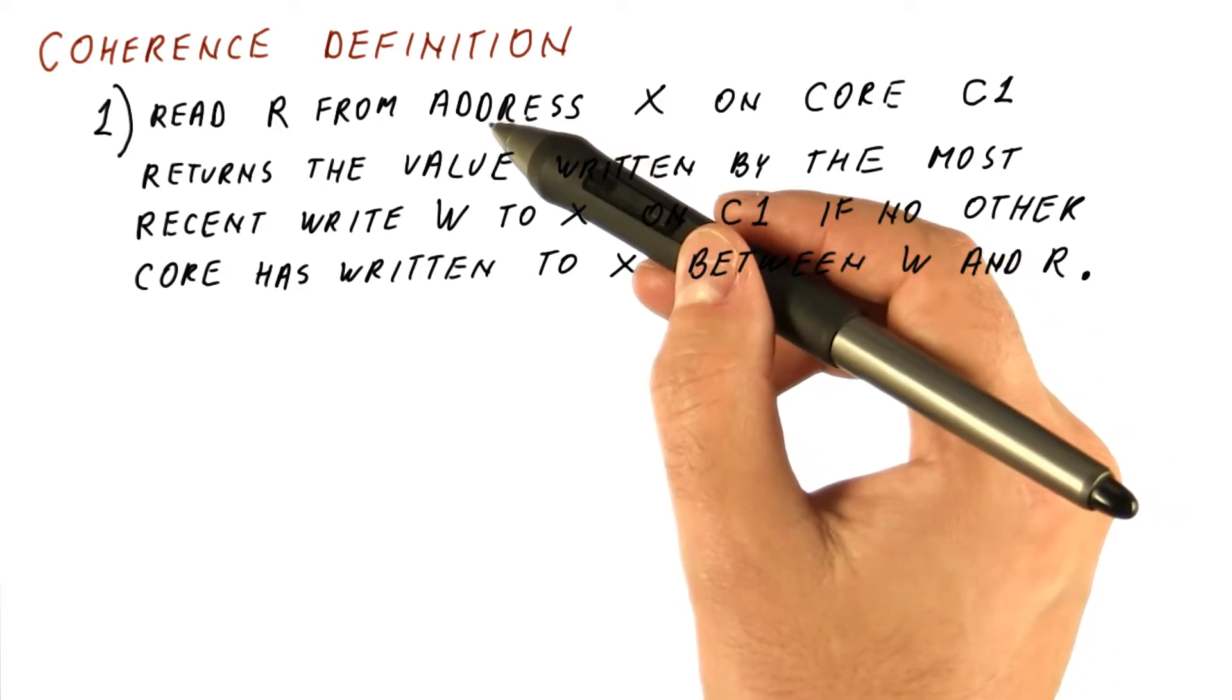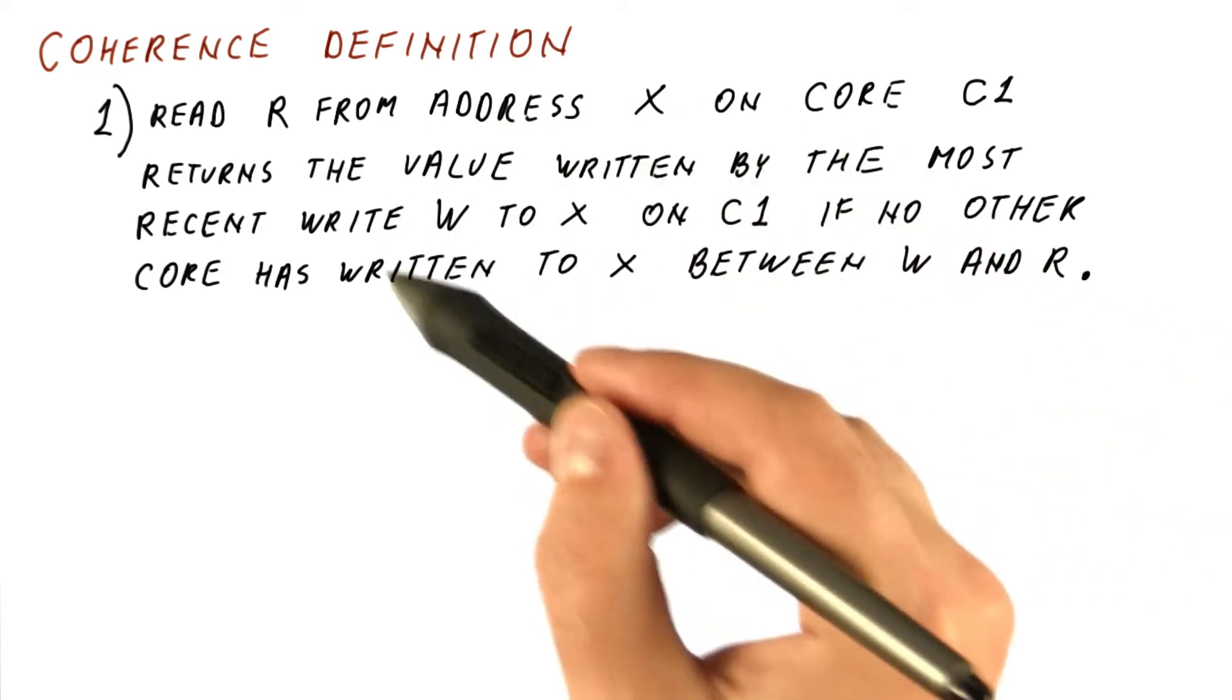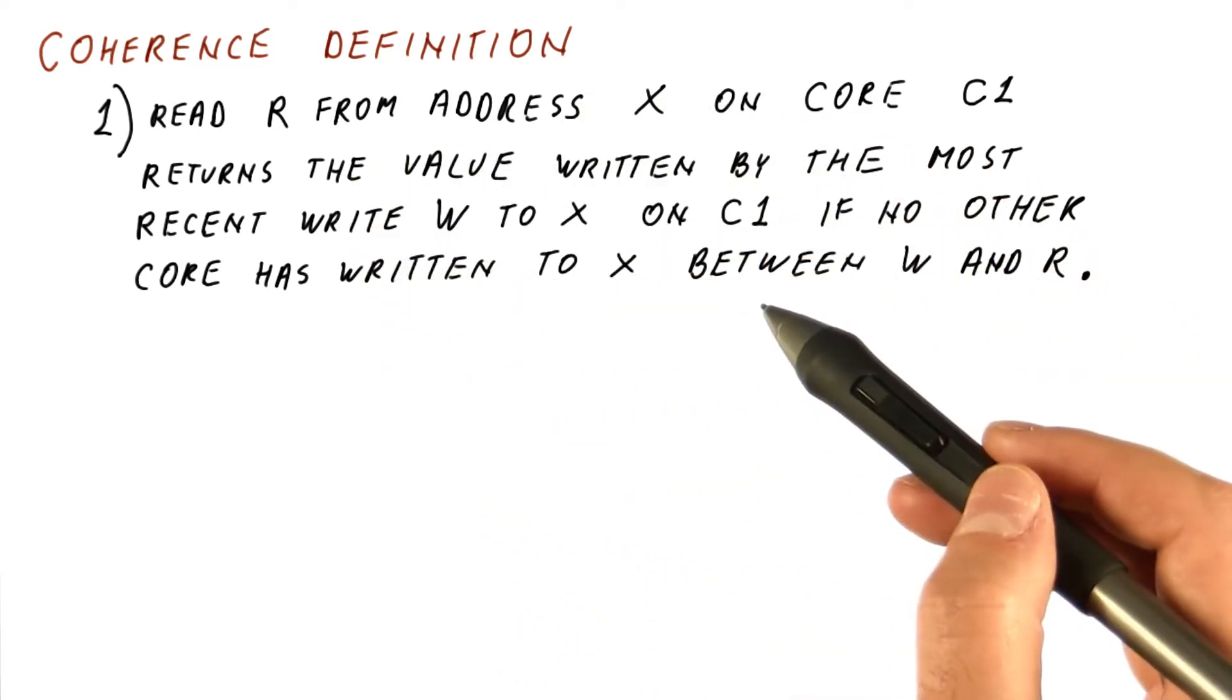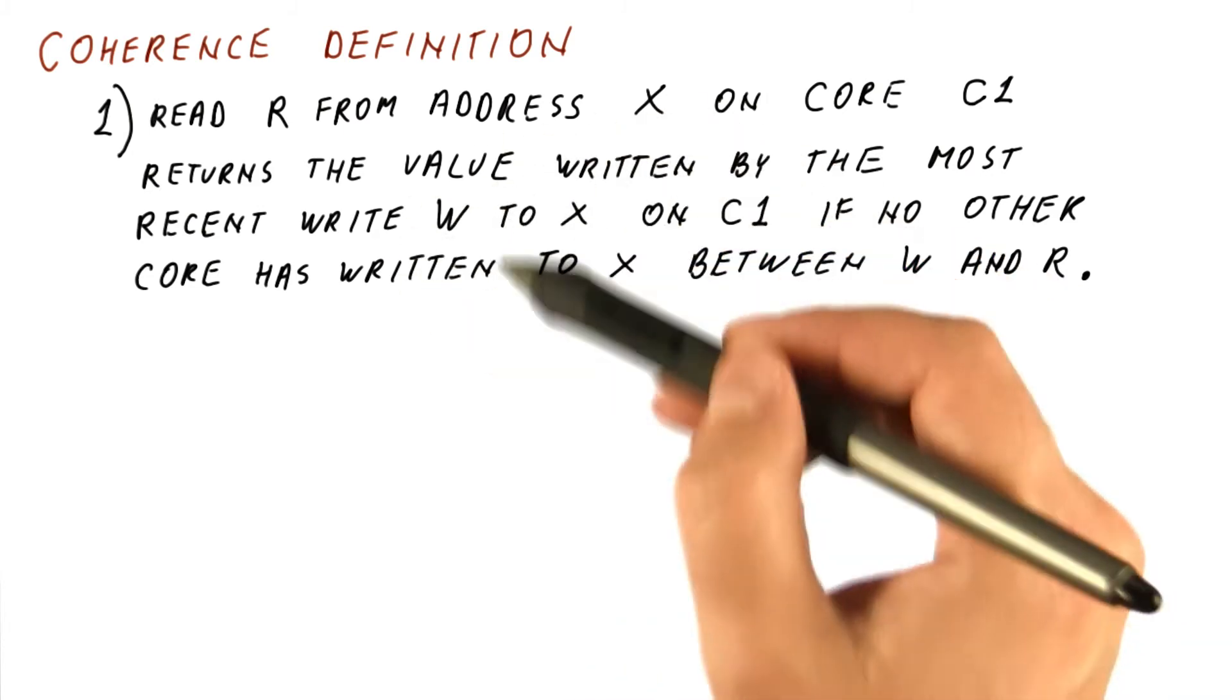then its reads should be getting the most recent writes from the same core. This basically says that a coherent behavior includes correct uniprocessor behavior as long as the location is accessed by only one core.